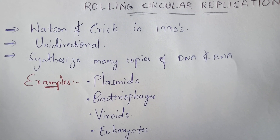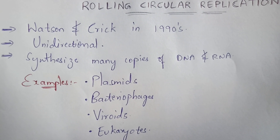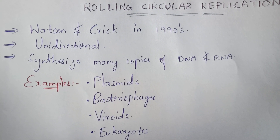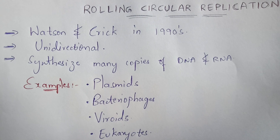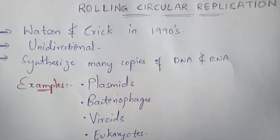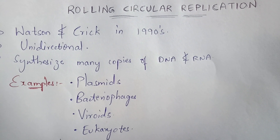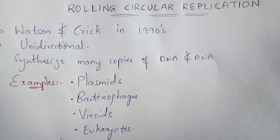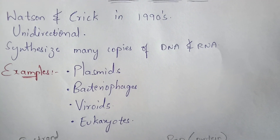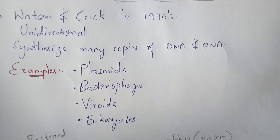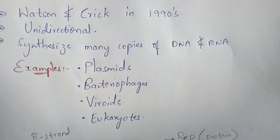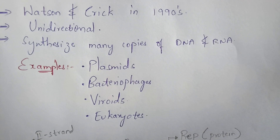Viroids mainly consist of RNA — they do not consist of DNA, only RNA. The genetic material present in viroids is RNA, and that RNA is in a circular shape. So that genome undergoes rolling circular replication. This replication is only noticed for genetic material which is in the circular form only; if it is not in circular form, it does not undergo rolling circular replication.